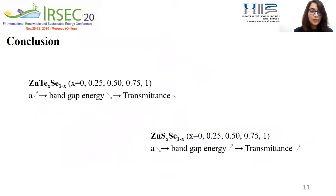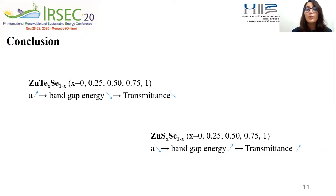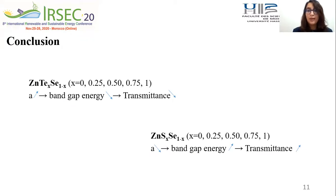To recap the main points: for ZnTe-Se, the lattice parameter increases, but the band gap energy and the transmittance decrease with Te concentration. Thank you for your attention.